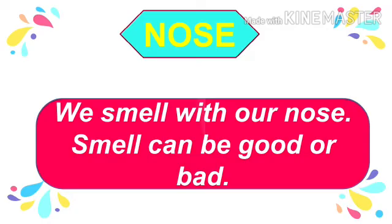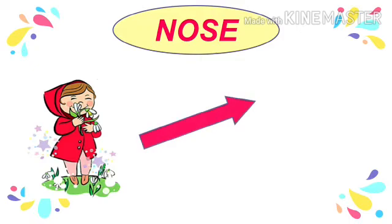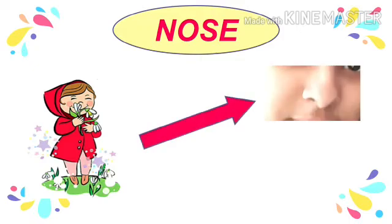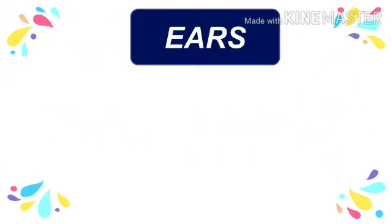We smell with our nose. The smell can be good or bad. See in the picture — a girl is smelling the pleasant smell of a flower with the help of her nose. Now let's come to the third sense organ, which is ears.